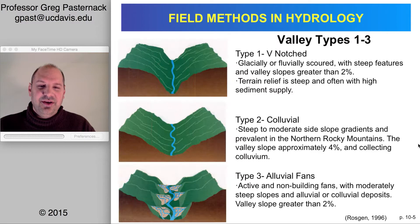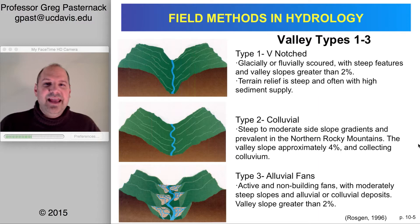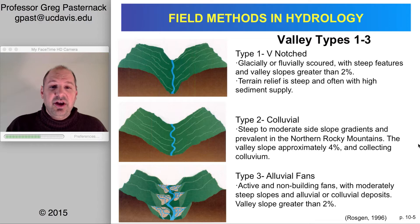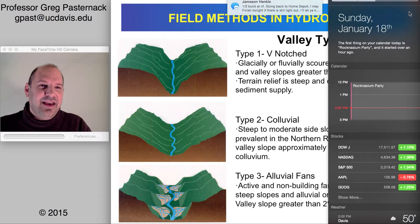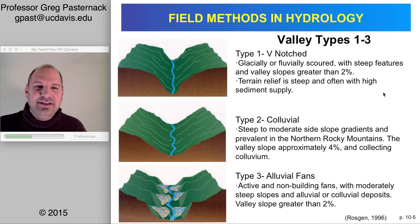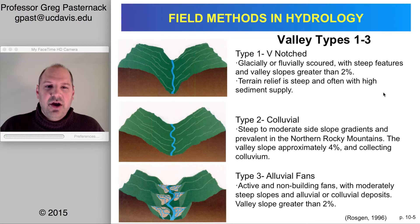Valley types come from David Rosgen's 1996 textbook — a useful typology for appreciating what kinds of processes might be occurring. The first three types — types one through three — are generally steep and associated with well-dissected landscapes. Type one is a V-shaped, fluvially scoured, very steep terrain that could become more U-shaped if glacially carved. Type two involves steep hillside areas. Type three has a valley with many well-dissected, sediment-producing tributaries creating alluvial fans that protrude onto the valley floor and force the stream into different plan-view positions.